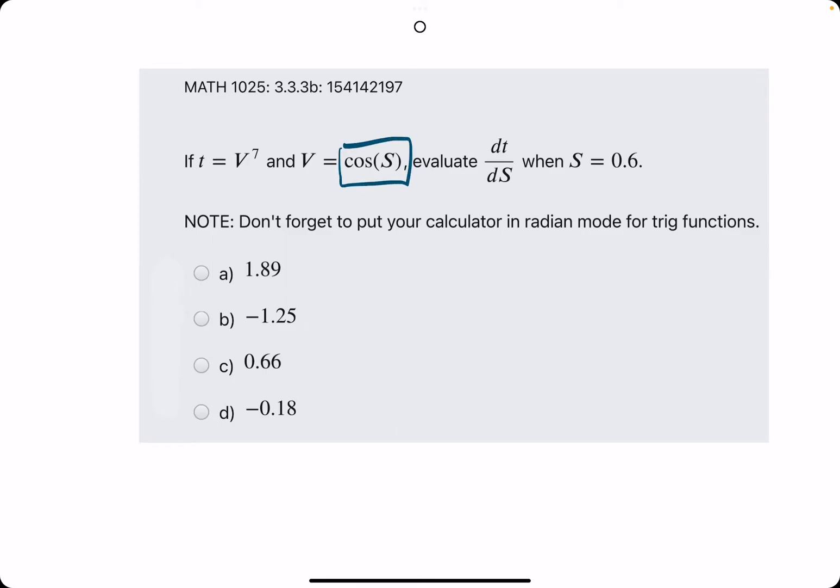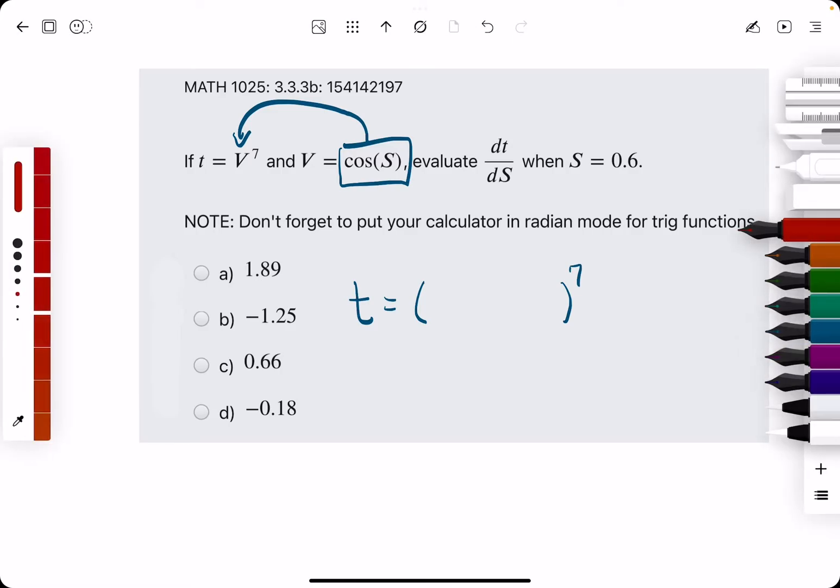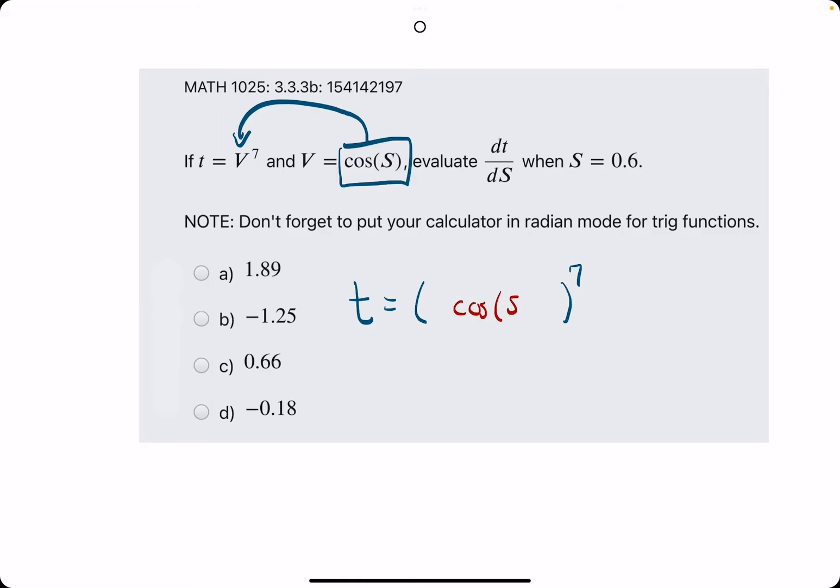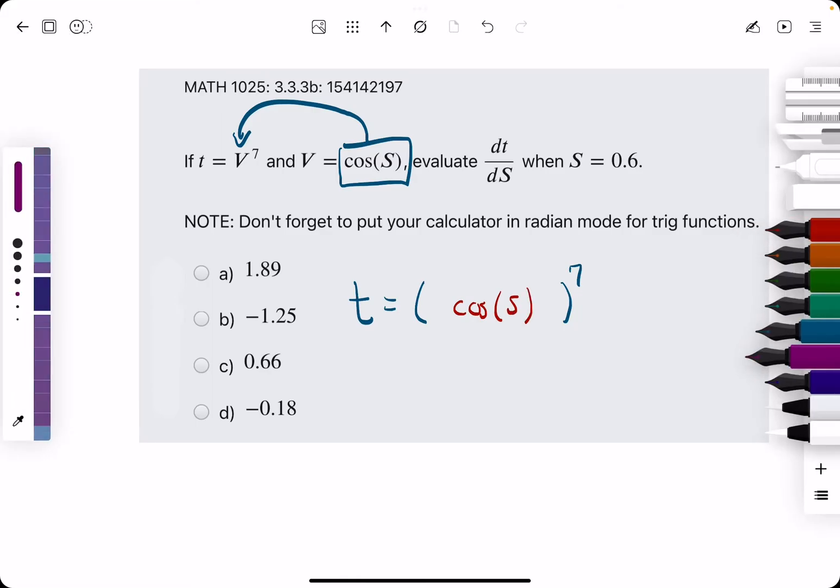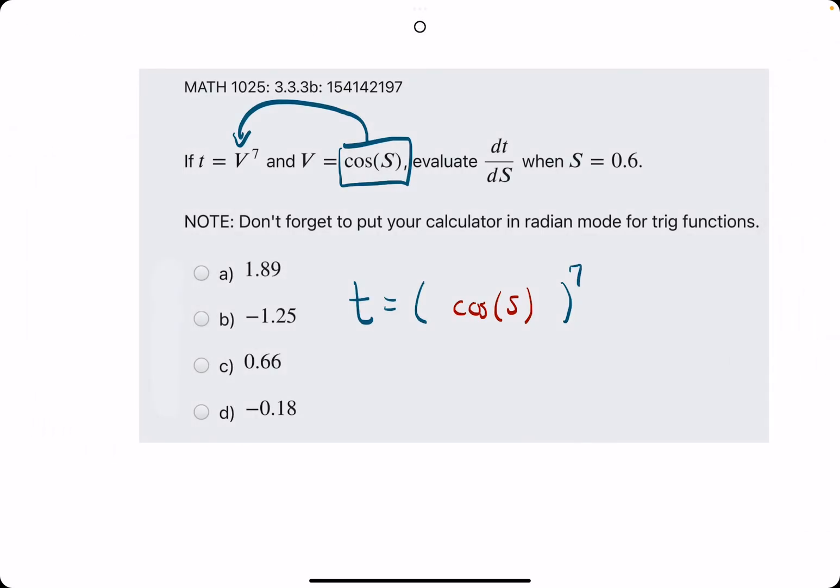In this case, we have cosine of s being plugged into this v. So, we have the function t is not v to the seventh, but instead, let's do two different colors, cosine of s to the seventh. Starting with the outside layer, we will do t prime, or dt over ds.